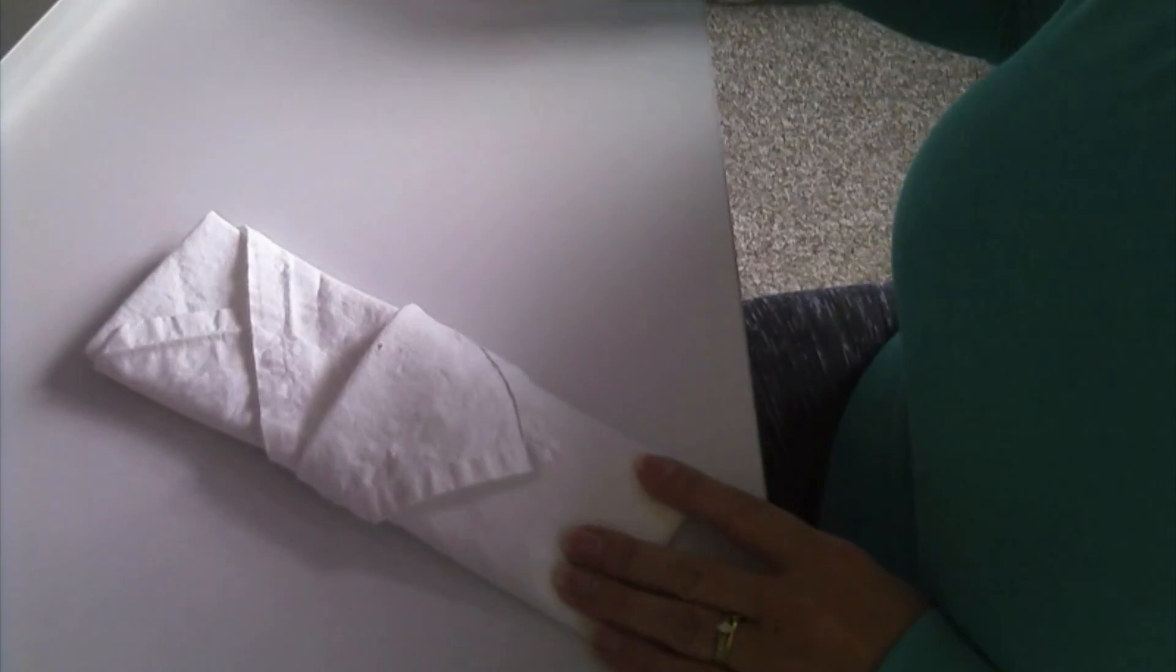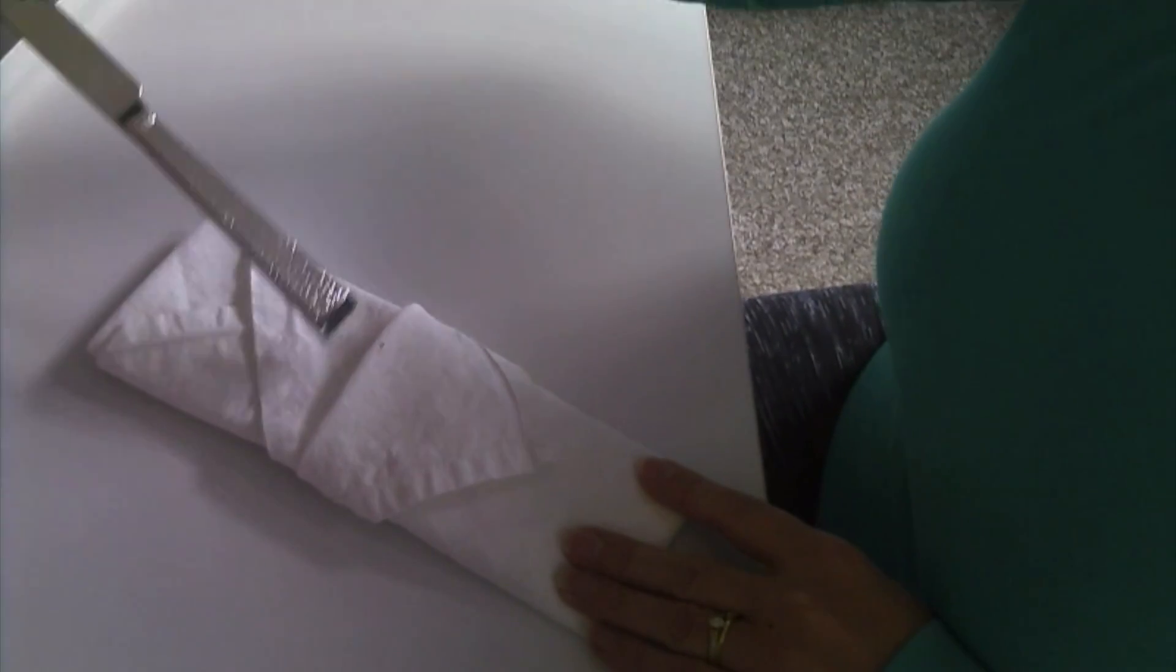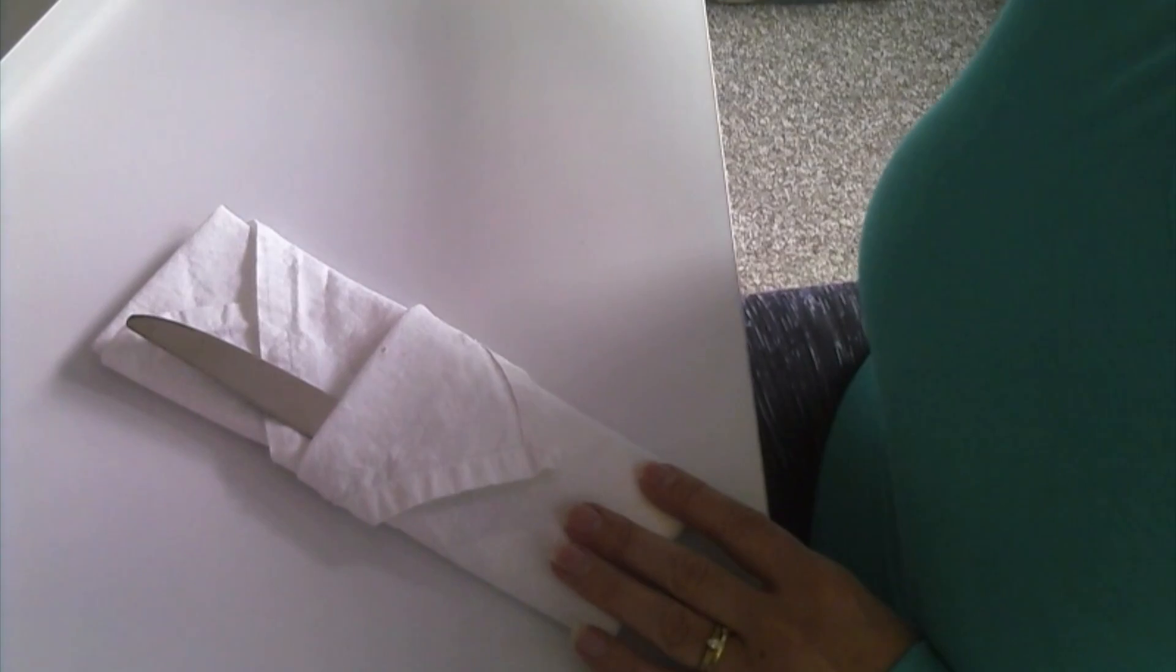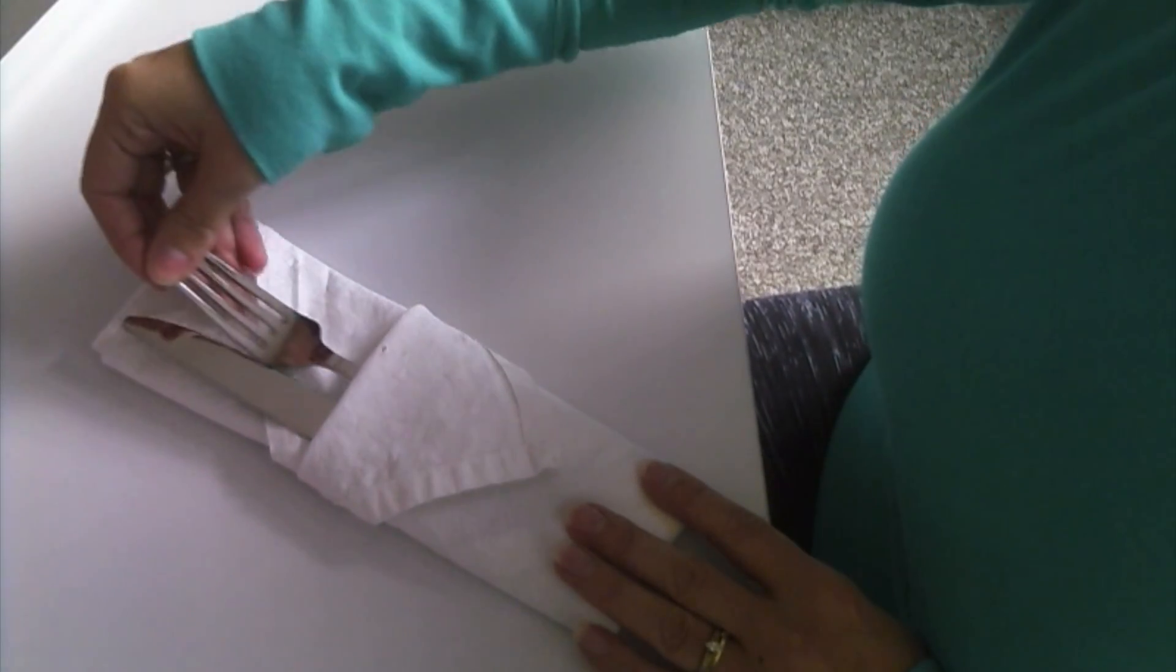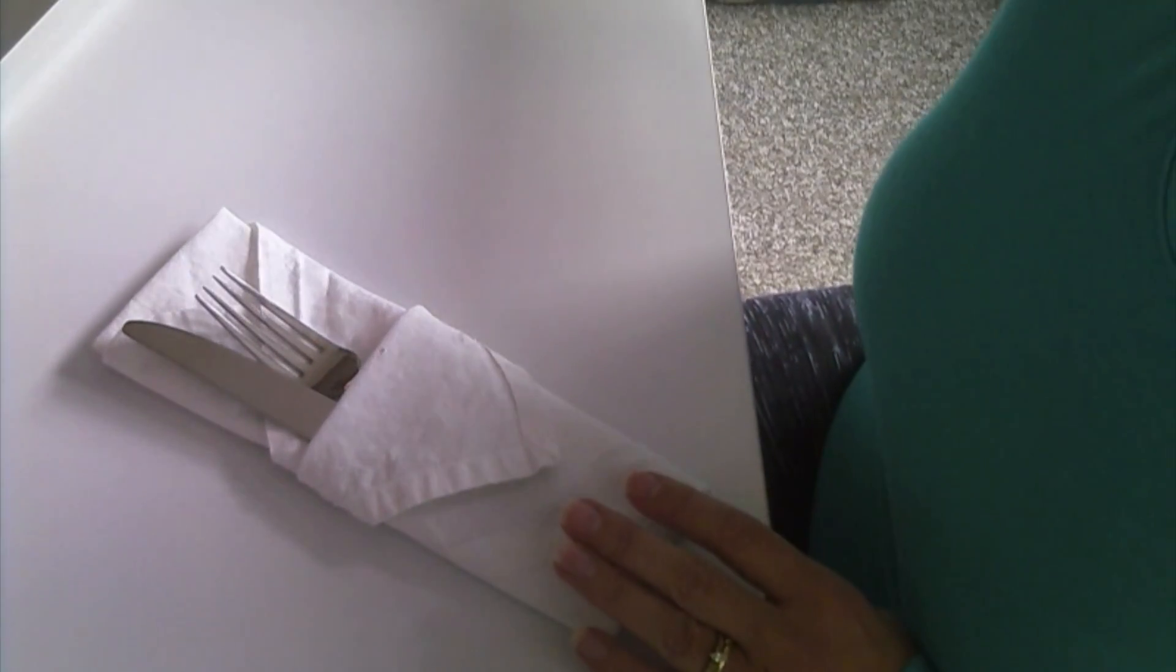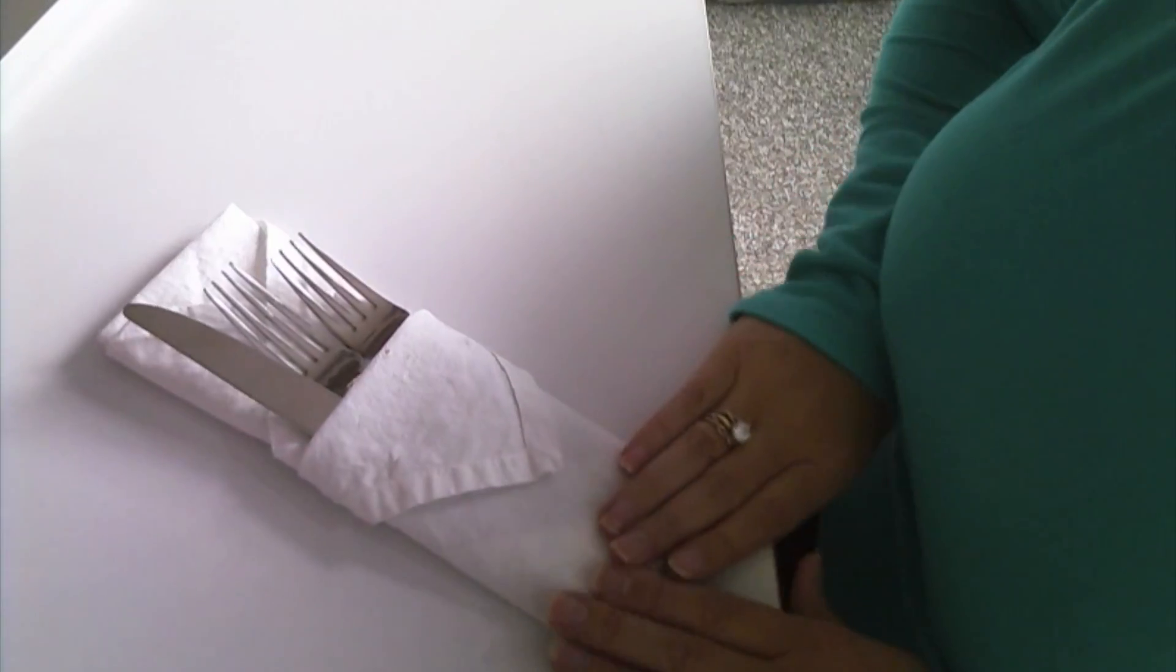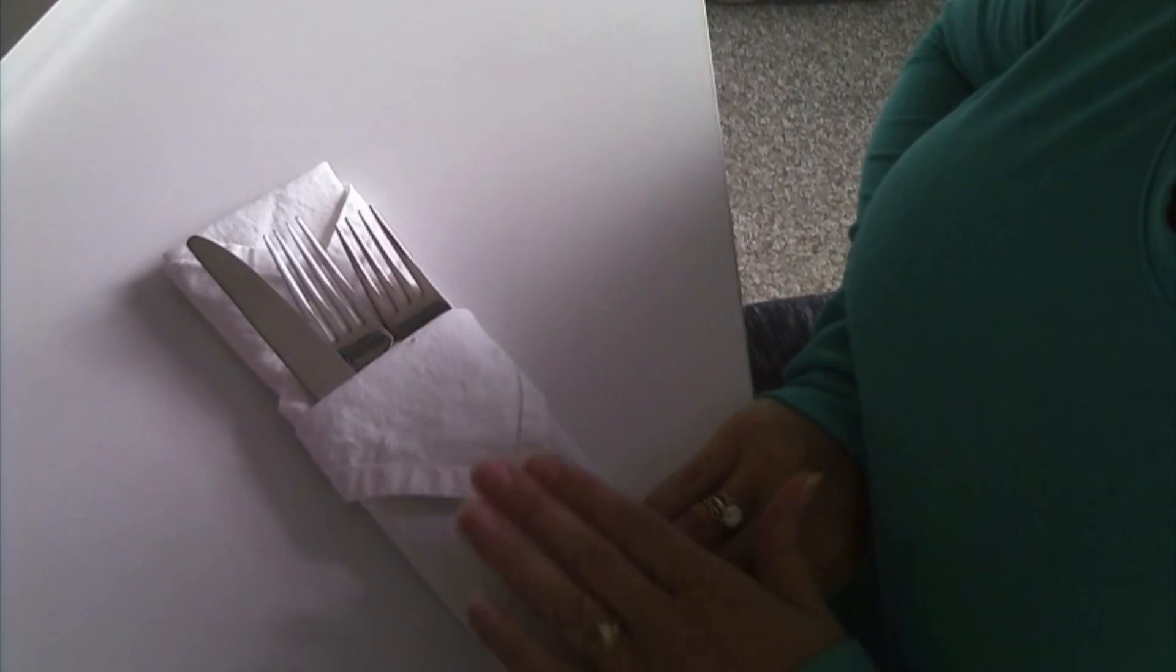Now the next step I do is I put my silverware in. I'm using a knife which I'll put on the very right hand side, a large fork which goes in the middle, and then a salad fork which goes on the very left hand side. It's going to sit in that little pocket just like that.